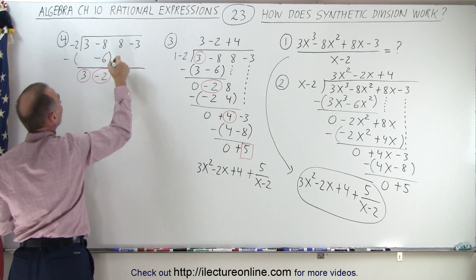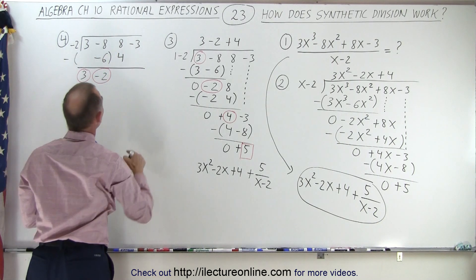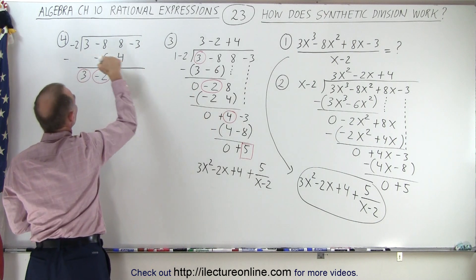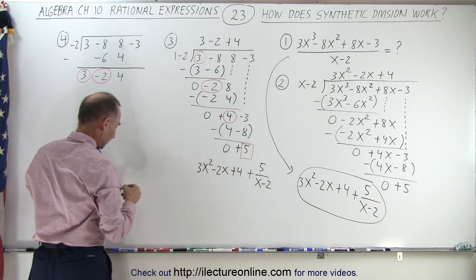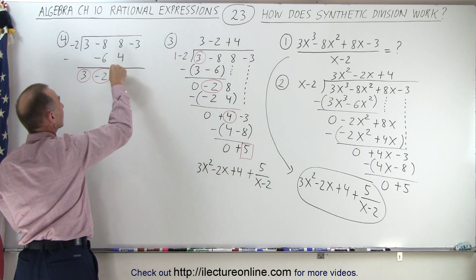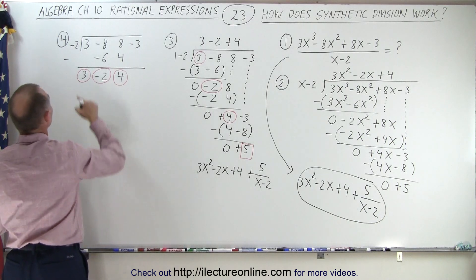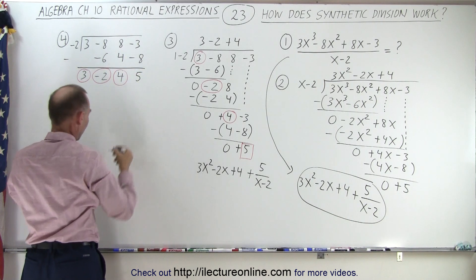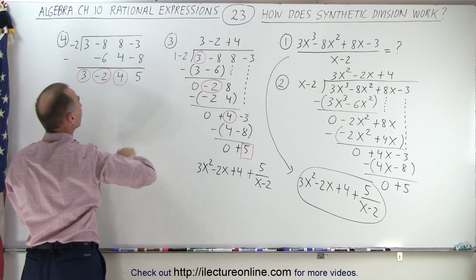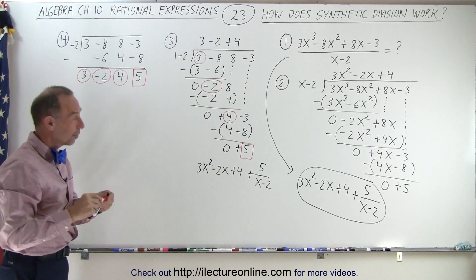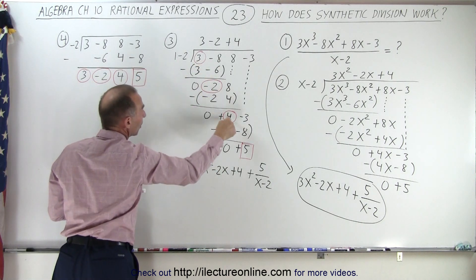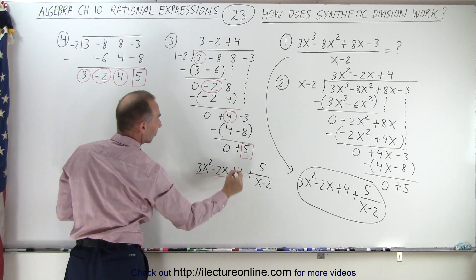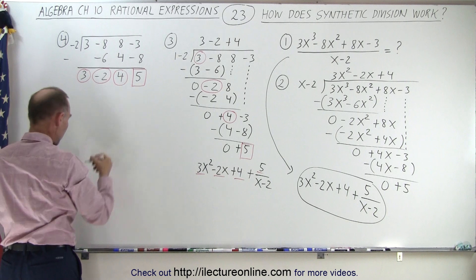Then we have the next one: negative 2 times negative 2 is positive 4. We subtract these numbers and notice we get the number 4: 8 minus 4 is positive 4, which is the number I got over there. Finally, we multiply negative 2 times 4 to get negative 8. But we're subtracting negative 8 from negative 3, which gives us positive 5 — that's the last number, the remainder, obtained right here. So by using this technique, we get the very same numbers: the 3 defining 3x squared, the negative 2, the positive 4, and the remainder 5.